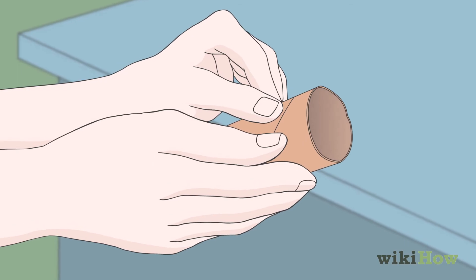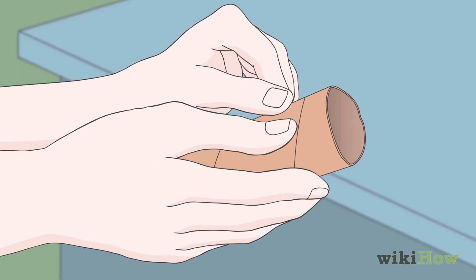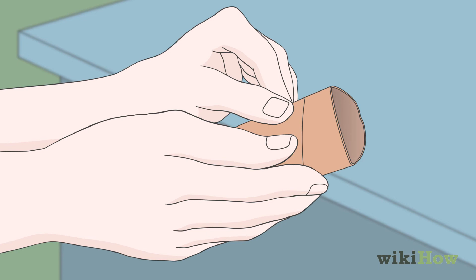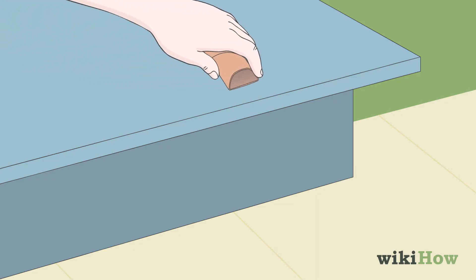To make your own mousetrap, start by partially flattening an empty paper towel roll so it can rest on a flat surface without rolling.